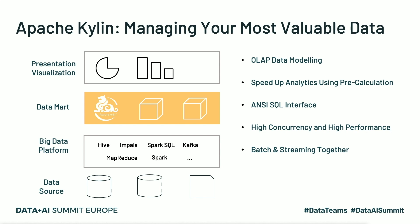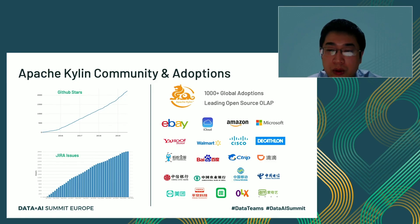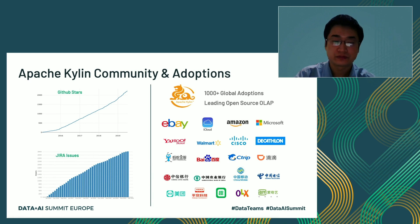Query performance can be less than one second even on petabyte-scale data. Kylin supports a standard SQL interface — the most common data service API for developers and analysts — providing ODBC and JDBC drivers. Another key advantage is high concurrency: thousands of concurrent users can be supported based on pre-calculation technology. In the latest version, Kylin can also analyze batch data and streaming data together, so if data is ingested as a real-time stream, you can query it with SQL in Kylin.